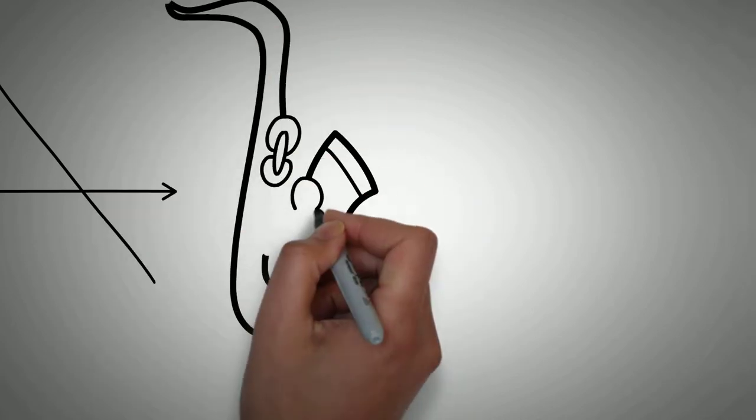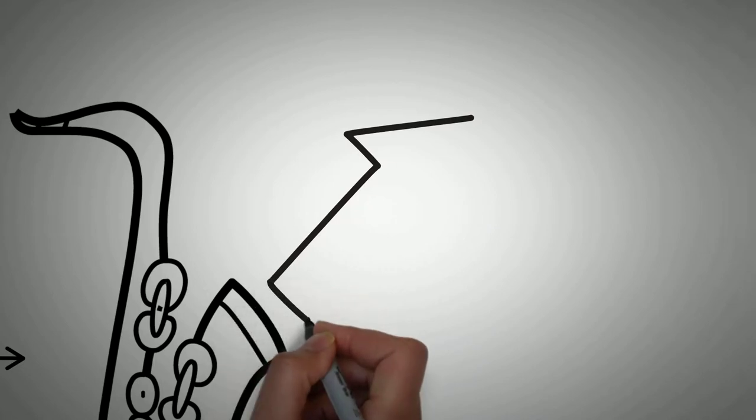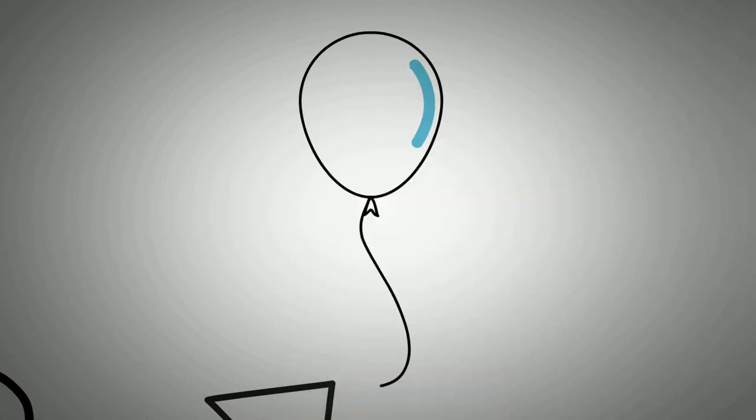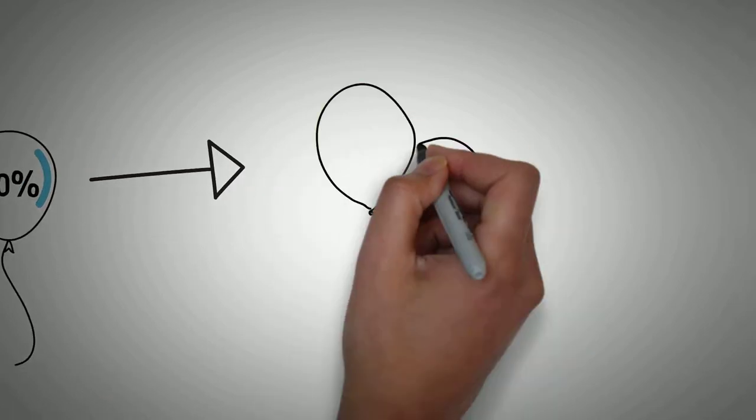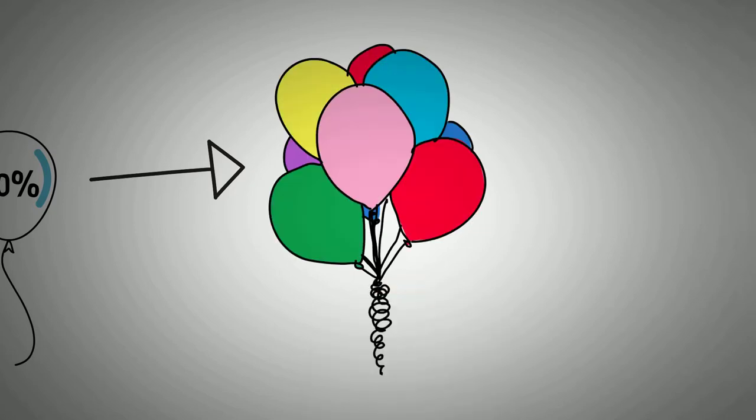You always have to figure out where you want them to be. How jazzed do you want them to be? Then you have to be more than that. If I want somebody's energy level at 80%, I have to be at 100%. If I want their energy at 100%, I have to be at 150%. I've got to be more exciting than they can possibly imagine.